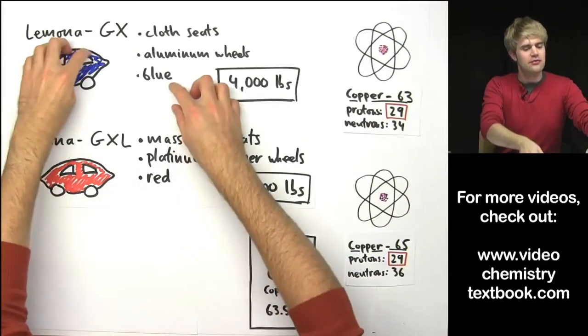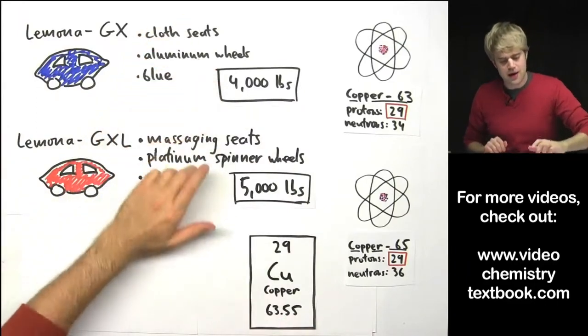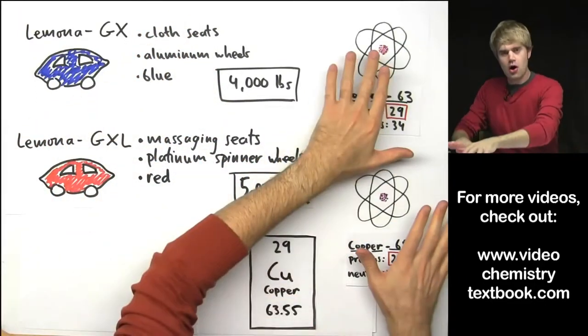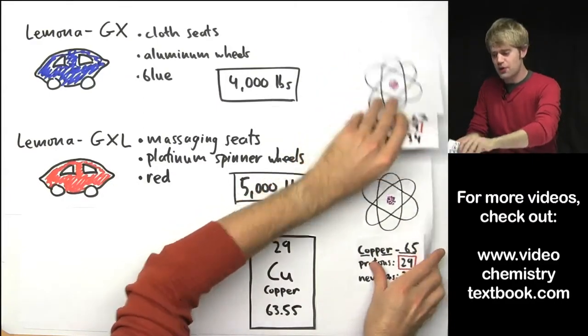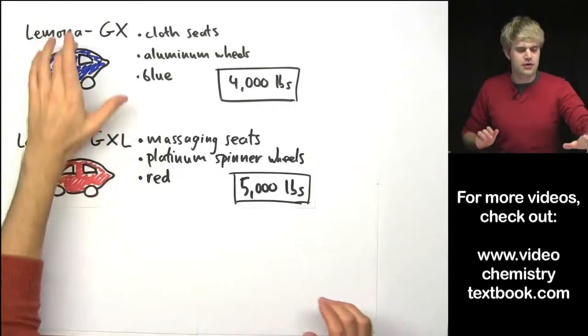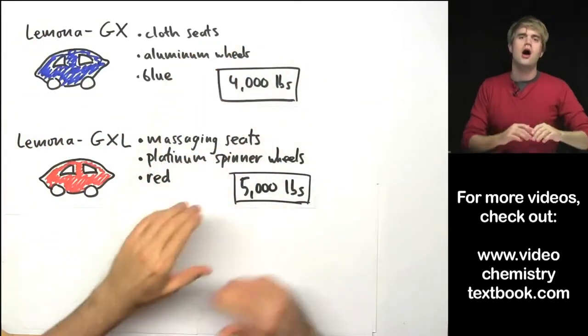Just the way that if you have the shape of a lemon the car is a Lamona and it doesn't matter what other features come in that car. This is all we're going to talk about with isotopes for right now but just keep this in the back of your mind that the models of a car are very similar to isotopes of an element.